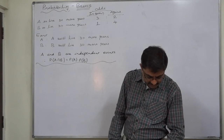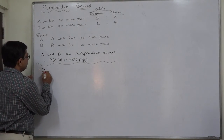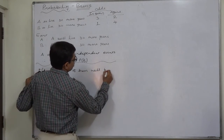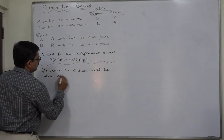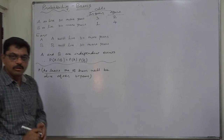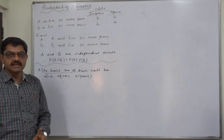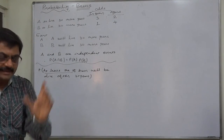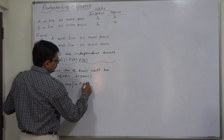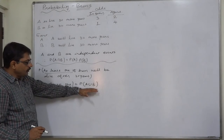Now, what is the question? Find the probability that at least one of them will be alive after 30 years. Probability of at least one can be calculated in many ways, but I personally suggest using the addition theorem, because that is the easiest way to calculate probability of at least one. Probability of at least one means the probability of the union of these two events.